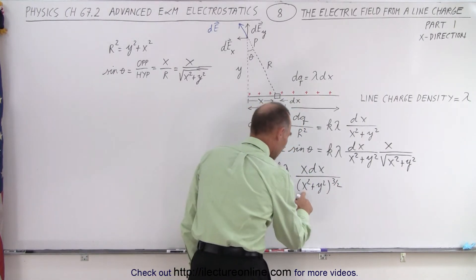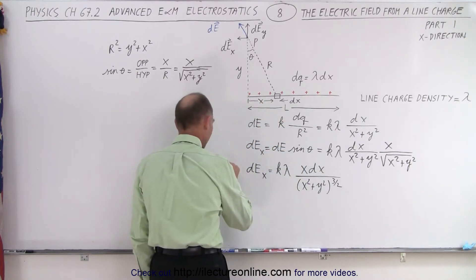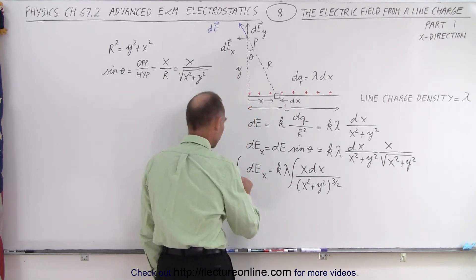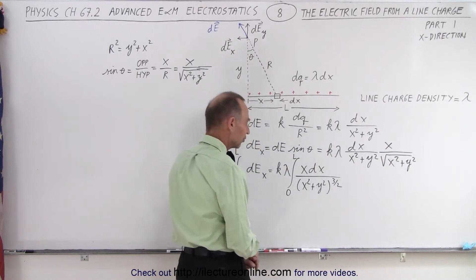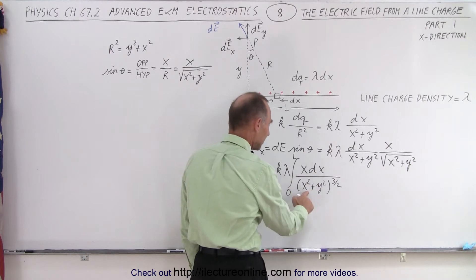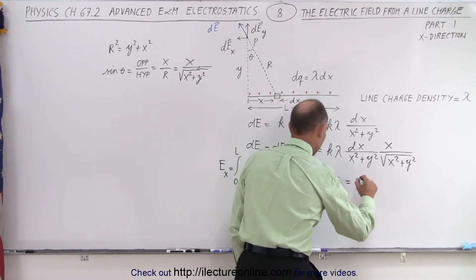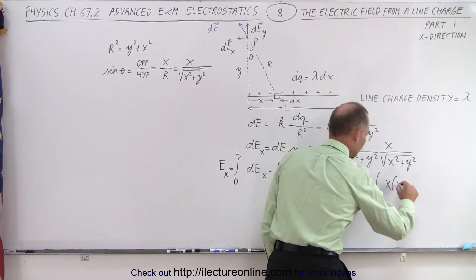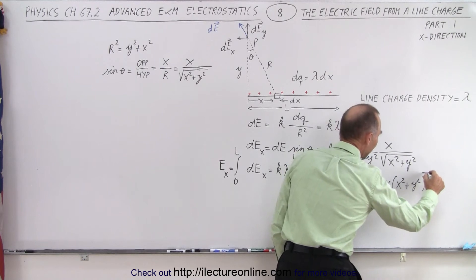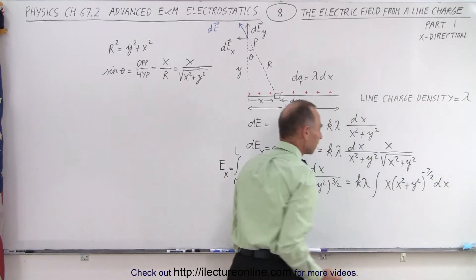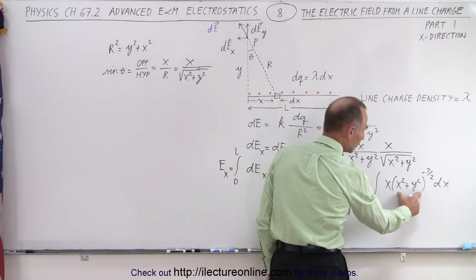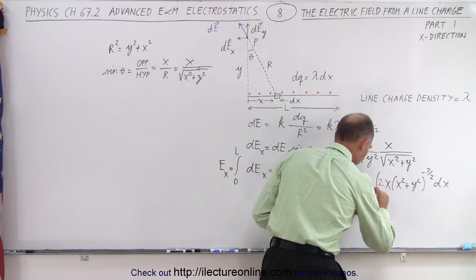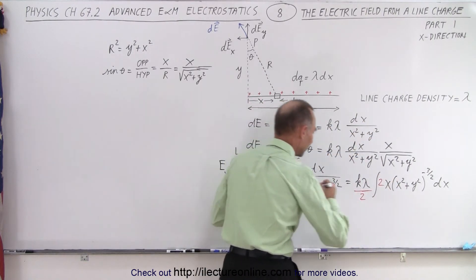Now we want to find Ex, which is equal to the integral of dEx. We're going to integrate from 0 to L — that's the length of the line of charge. We have X dx in the numerator and X squared to the 3/2 in the denominator, so this can be written as K times lambda times the integral of X times the quantity X squared plus Y squared to the minus 3/2 dx. Notice that if U equals X squared plus Y squared, then dU equals 2X dx — we need a factor of 2, so we multiply and divide by 2 so we can integrate it. The limits of integration are from 0 to L.